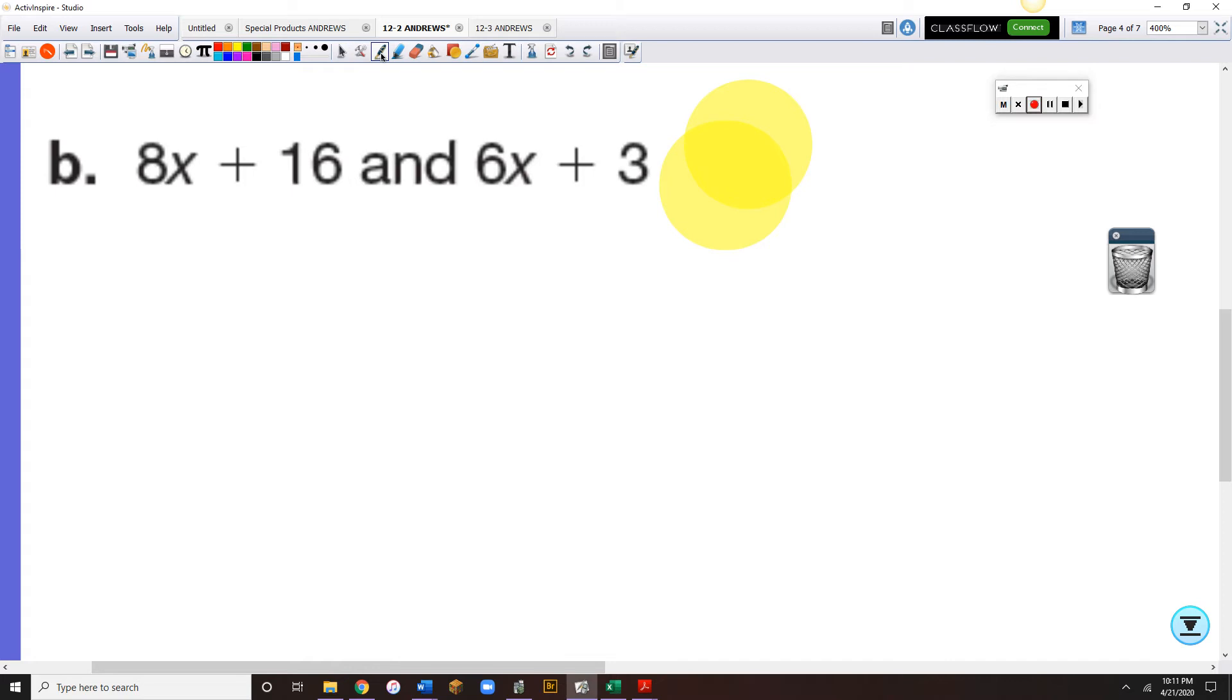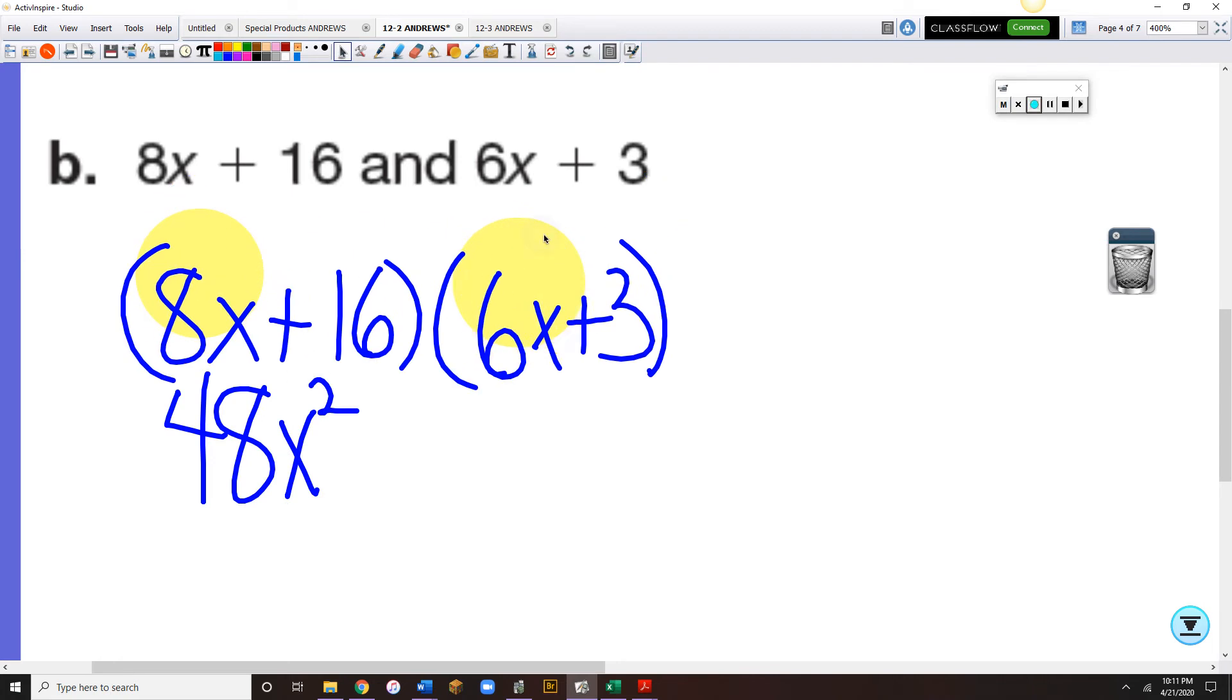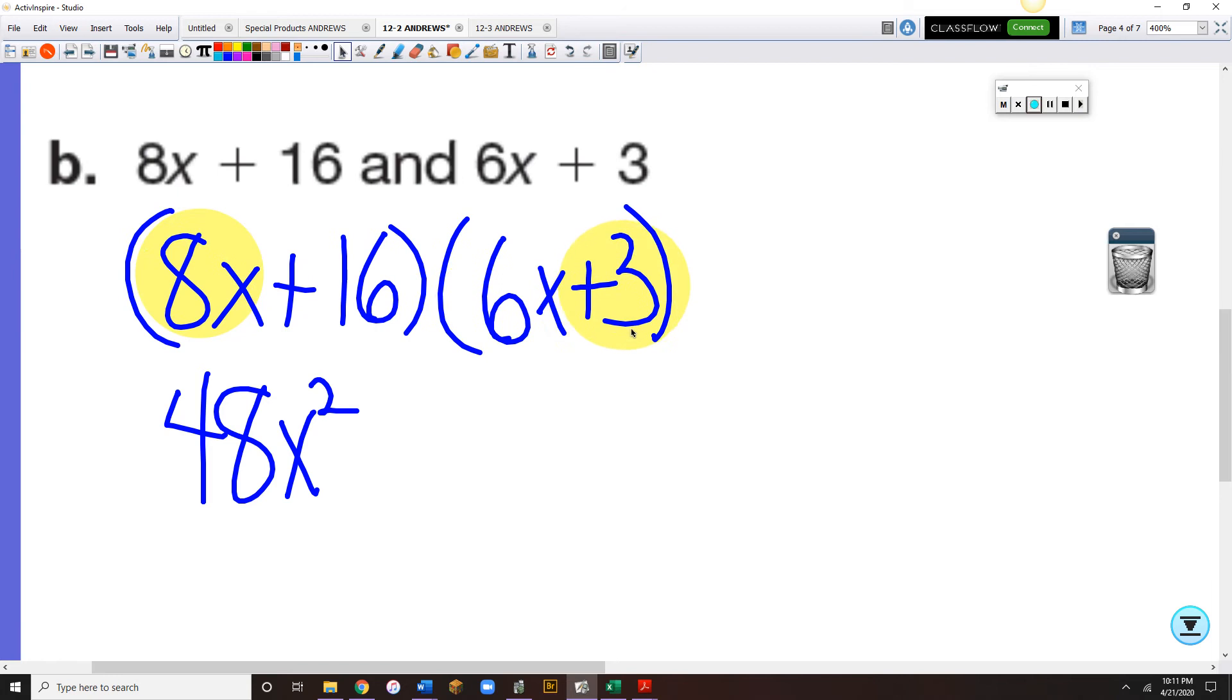All right, next we've got 8x plus 16 and 6x plus 3. So 8x times 6x is 48x squared.